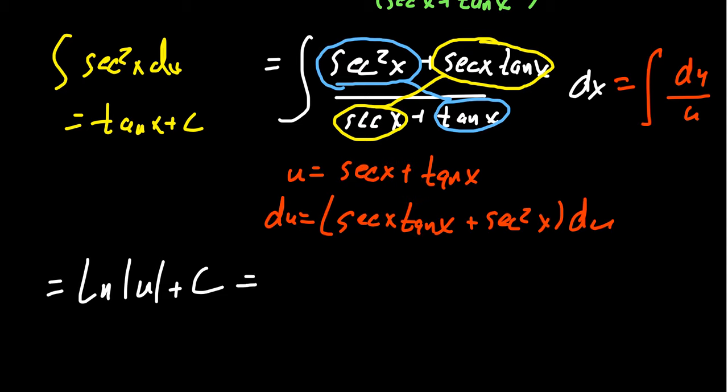And then replacing u with secant plus tangent, we see the antiderivative will be the natural log of the absolute value of secant x plus tangent x plus a constant. Like so.